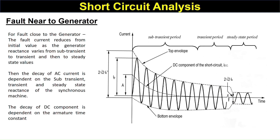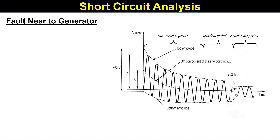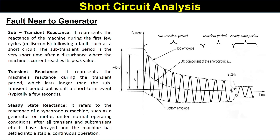The decay of the AC current depends on the sub-transient, transient, and steady-state reactances of the synchronous machine. The decay of the DC component is dependent on the armature time constant. Sub-transient reactance represents the reactance of the machine during the first few cycles in milliseconds following a fault such as a short circuit.